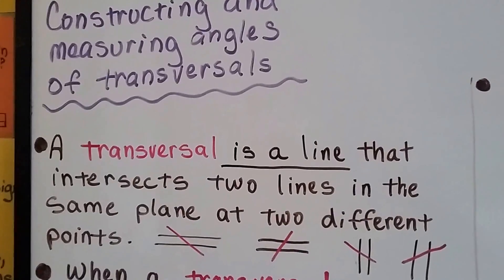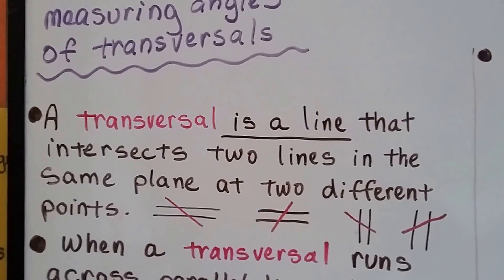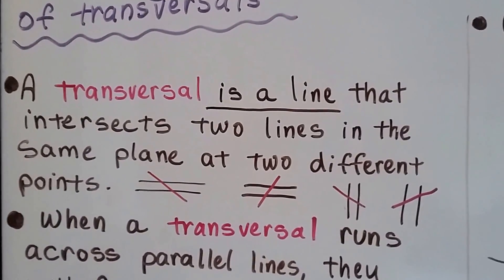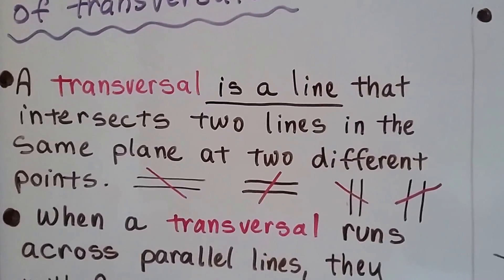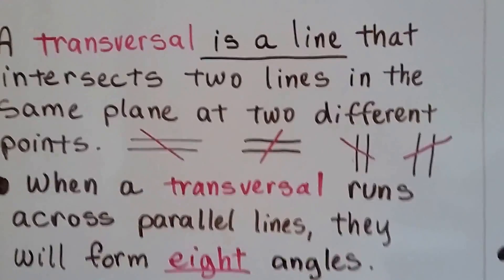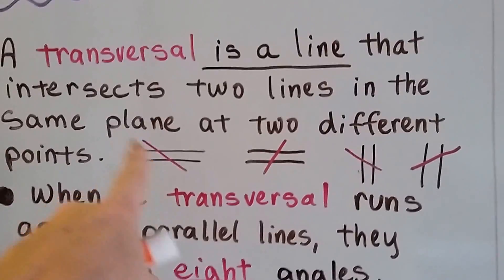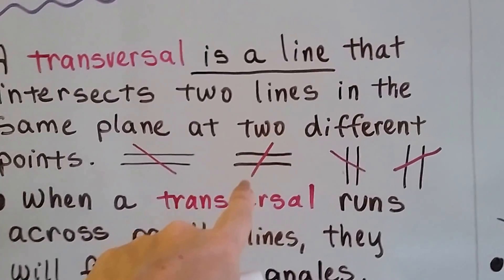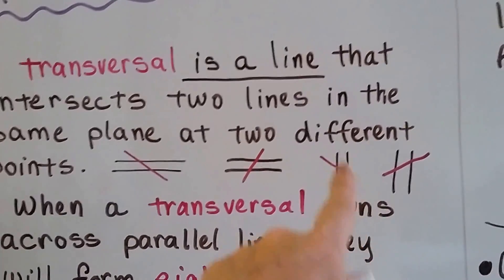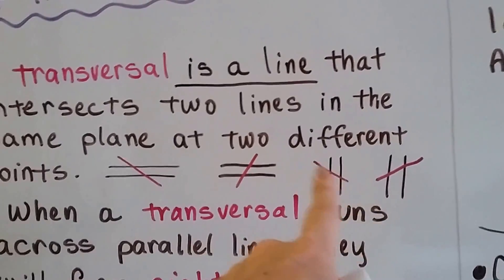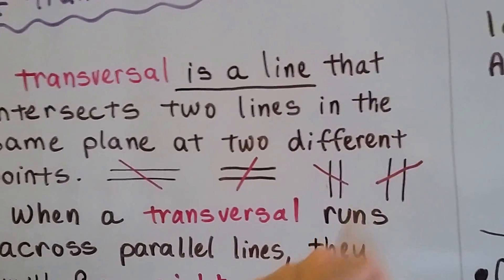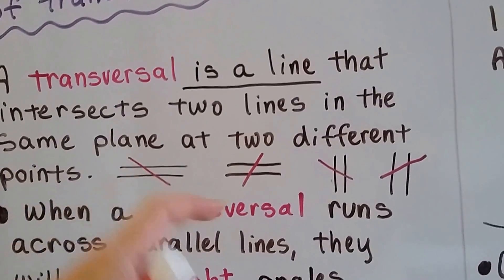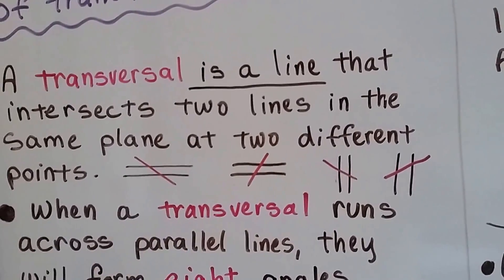If you missed the first video, 11.1a, we talked about how a transversal is a line that intersects two lines in the same plane at two different points. So if we have parallel lines, the transversal is this dark pink line going through it. It doesn't matter what direction it's going, and the parallel lines can even be standing vertically. See how it's heading downward like a negative slope, and this one's heading upwards like a positive slope?